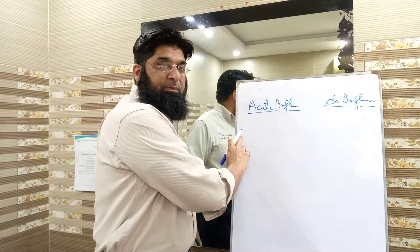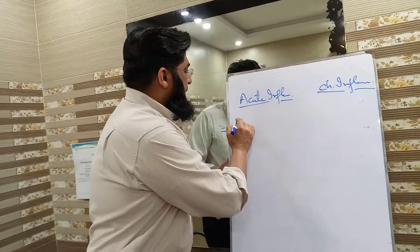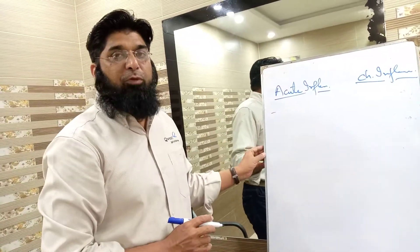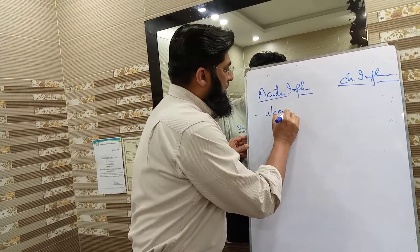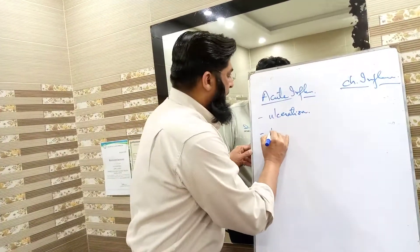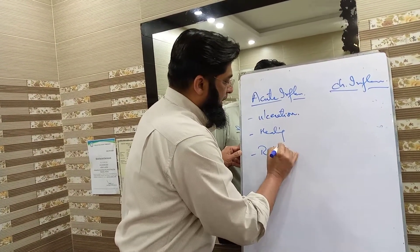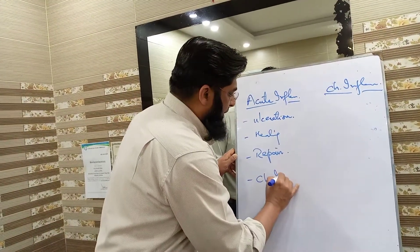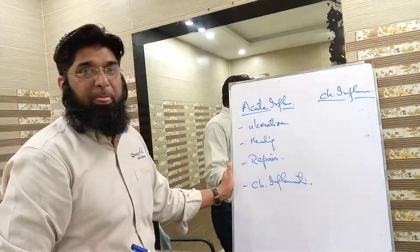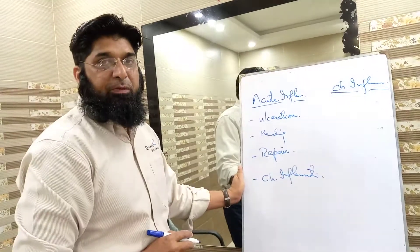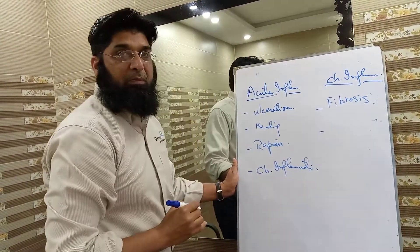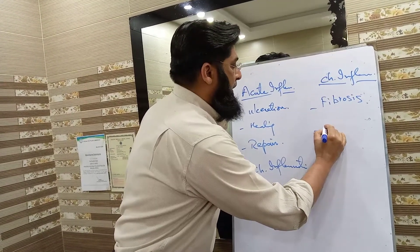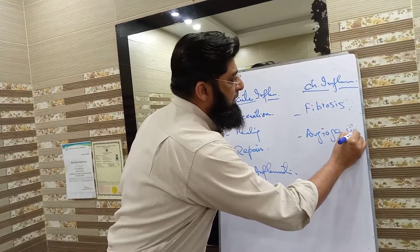In acute inflammation, the stimulus acts for a shorter period of time and acute inflammation may lead to ulceration, healing, repair, or chronic inflammation. On the other hand, chronic inflammation may lead to fibrosis, angiogenesis as we have discussed, and tissue damage.